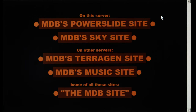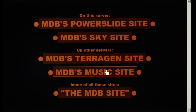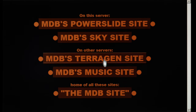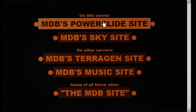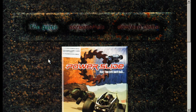Another website on another free host. It contained MDB's Powerslide site, the first version of my sky site, and also links to websites on other servers and hosts. Let's view the Powerslide site. No rollover effects, because this website was also made in Netscape Composer. Here the graphics were made in Photoshop.